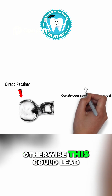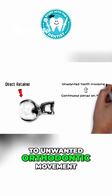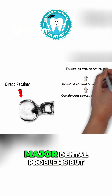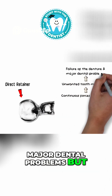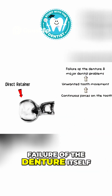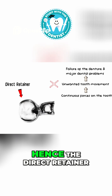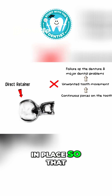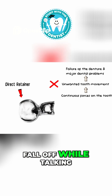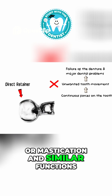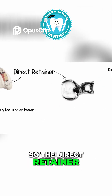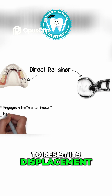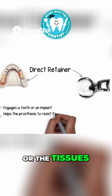Otherwise this could lead to unwanted orthodontic movement of the engaged tooth, which in the long term will not only create major dental problems but will also lead to failure of the denture itself. Hence the direct retainer essentially keeps the denture in place so that the denture does not fall off while talking, mastication, and similar functions. The direct retainer essentially helps the prosthesis to resist its displacement away from the tooth or the tissues.